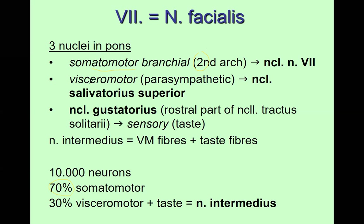A smaller portion is visceromotor. As we said, all visceromotor fibers coming from the cranial nerves are parasympathetic. It serves to supply salivary glands and lacrimal glands, and is called the superior salivatory nucleus.